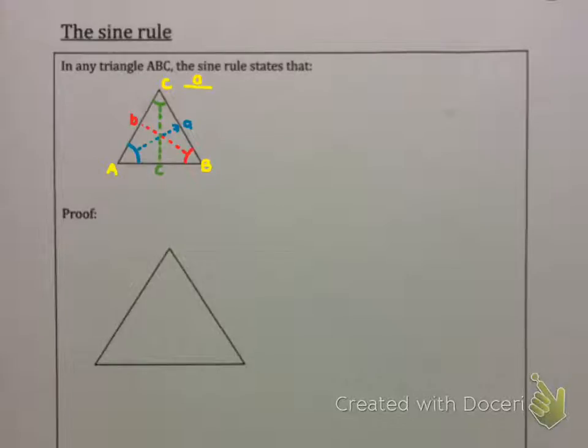Now the sine rule states, if you take any side, which I've taken side a, and you divide it by sine of the angle opposite it, it will be equal to any other side, in this case b, divided by sine of the angle opposite it, or equal to c divided by sine angle C. So basically, any side divided by the sine of the angle opposite it is always the same in a triangle.